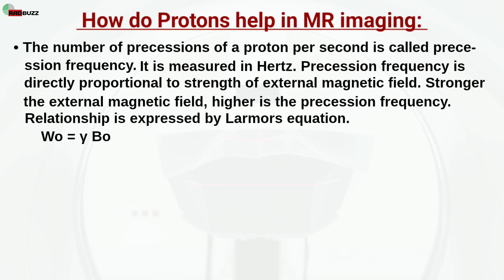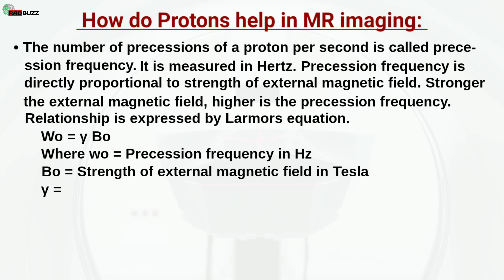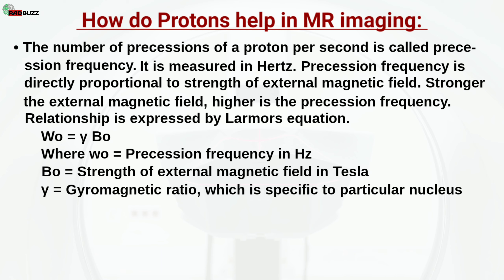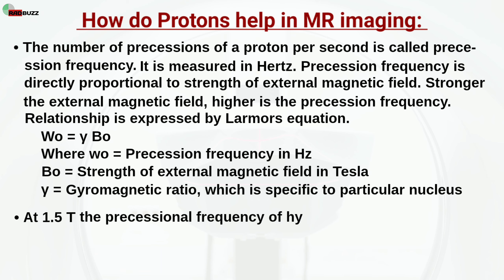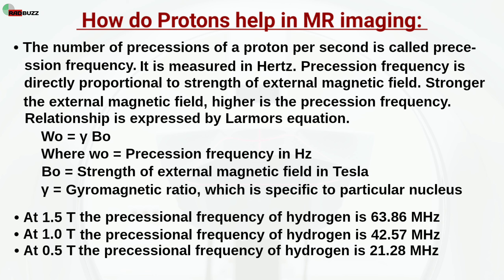Larmor's equation: W0 = γ · B0. Where W0 is the precession frequency in Hertz, B0 is the strength of the external magnetic field in Tesla, and gamma (γ) is the gyromagnetic ratio, which is specific to a particular nucleus. At 1.5 Tesla, the precessional frequency of hydrogen is 63.86 MHz. At 1.0 Tesla, it is 42.57 MHz. At 0.5 Tesla, the precessional frequency of hydrogen is 21.28 MHz.